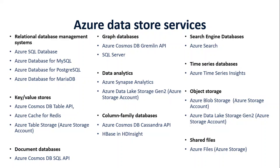For column family databases, which is also a NoSQL type, go for Azure Cosmos DB Cassandra API and HBase in HDInsight. For search engine kind of databases, Azure Search is available. For time series, there is Azure Time Series Insights. For object storage, Azure Blob Storage is available, and we can also use Azure Data Lake Storage Gen2, both part of Azure Storage Account. For shared files, like NAS drives using SMB protocols, Azure Files is the service available, and this is also part of Azure Storage Account.